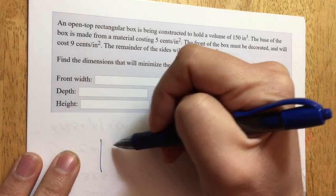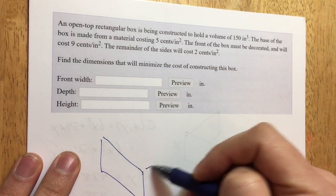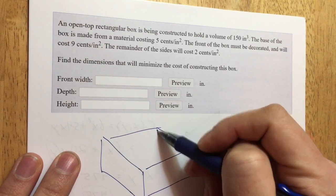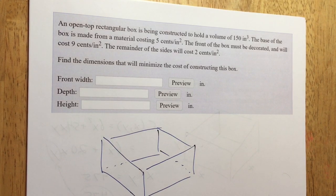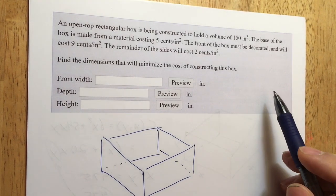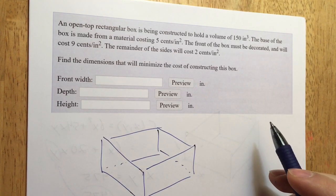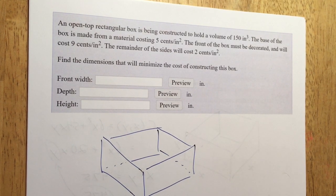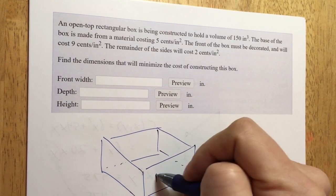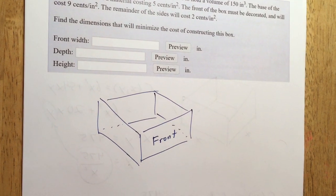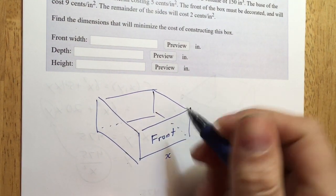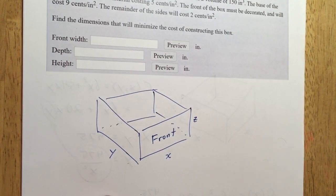Let's draw a picture of our box. It's open-top, so I'm leaving the top off — that's how I drew it. The front of the box is over here, because that makes a difference since it costs differently than the other sides. Let's label the sides of our box: this is X, this is Y, and this dimension is Z.